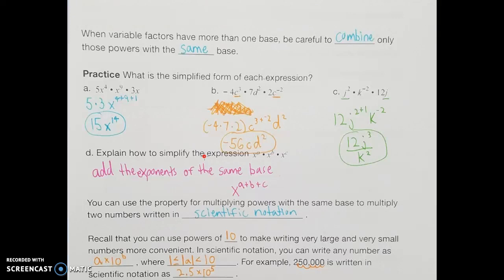In general, if asked to simplify an expression with all three bases the same — with different exponents a, b, and c — as long as I'm multiplying all with the same base, I can just add the exponents. So the result is x to the a plus b plus c power, since we're not sure what those numbers actually are.